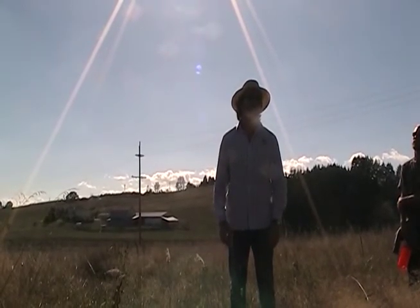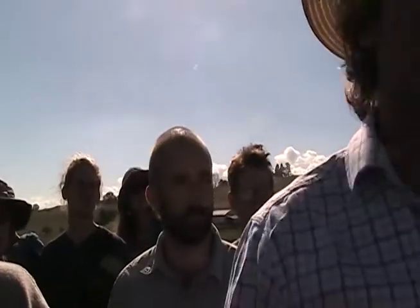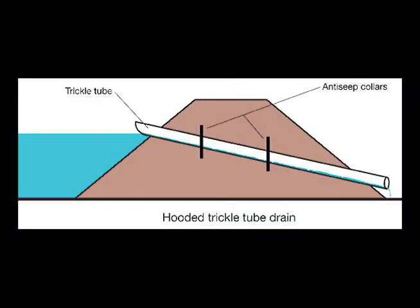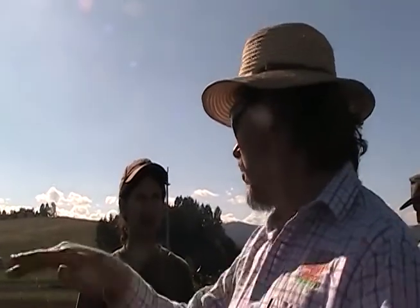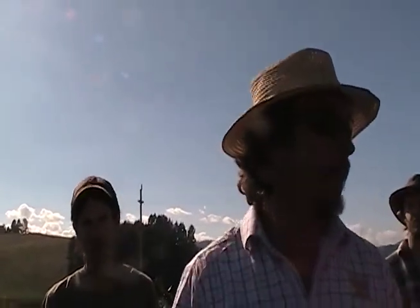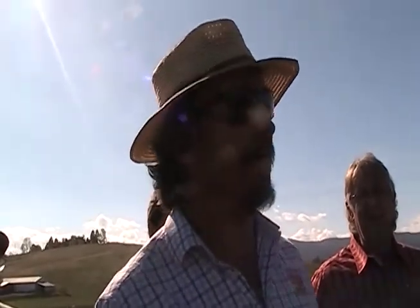A trickle pipe is where you put a pipe just below the level of the spillway, so instead of the overflow's only choice being to go through an earthen spillway, it actually goes through a pipe. That handles those base flows, and it's not until you get a bigger event that the water will actually run out through the spillway itself — it just keeps the water off the earth.